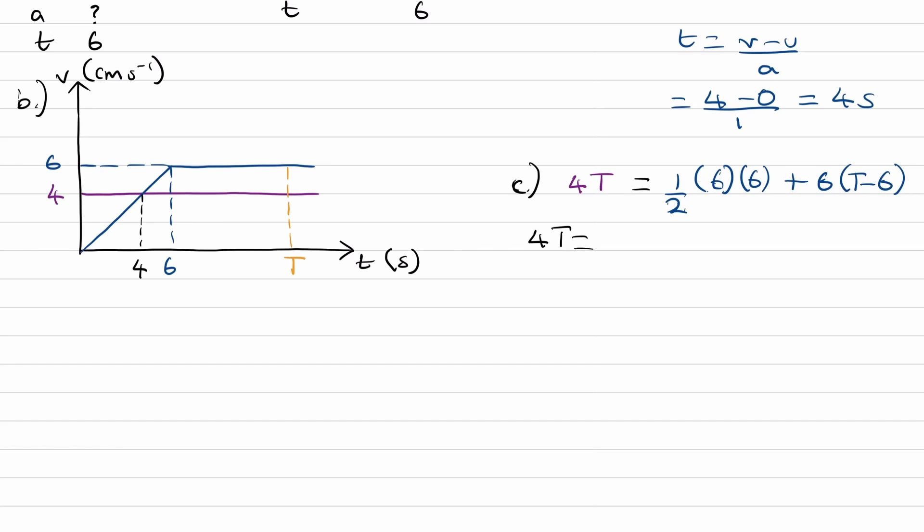Okay, expand everything out. Four T is equal to, so this is 36 times a half, so 18. 18 plus six T minus 36. Rearrange. We get two T is equal to, so 18 minus 36 is minus 18. Bring that over. It's 18. T is then nine seconds.